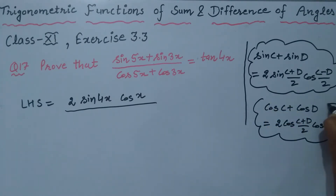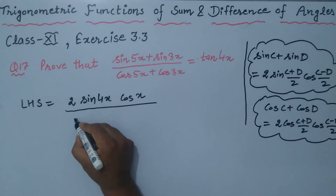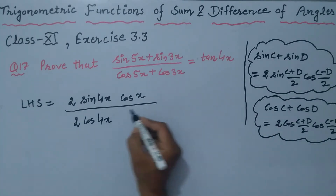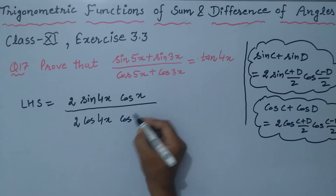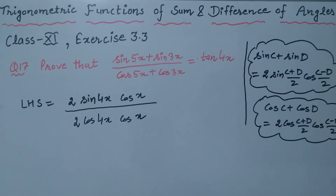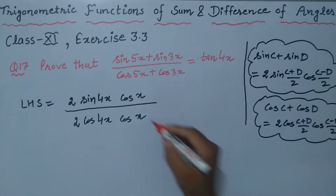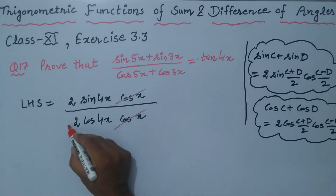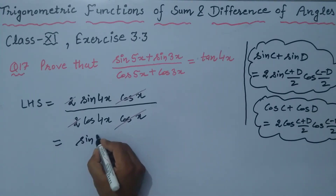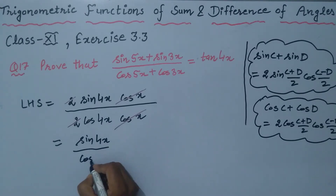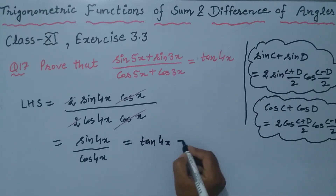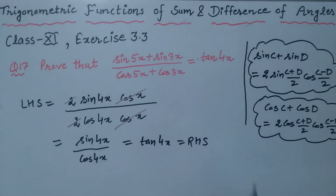Applying this rule, the denominator becomes 2 cos (5+3)/2 = 4x, into cos (5-3)/2 = x. The 2's cancel and cos x cancels from numerator and denominator, leaving sin 4x upon cos 4x, which equals tangent of 4x — the right hand side. Hence proved.